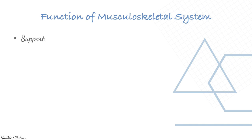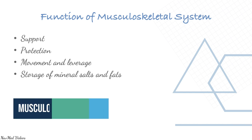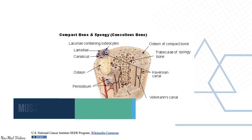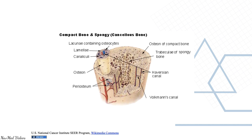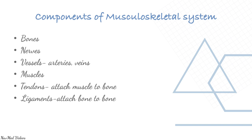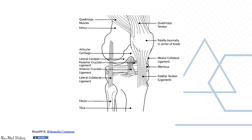The functions of the musculoskeletal system are support, protection, movement and leverage, storage of mineral salts and fats, and red blood cell production. The components of the musculoskeletal system are bones, nerves, vessels, muscles, tendons, ligaments, and joints.